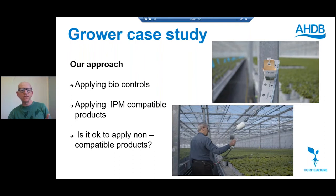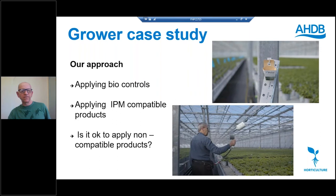Do we apply pesticides in an IPM-compatible manner? Yes, we do. Neil mentioned many of the products we would use. Yes, we still use SB Plant Invigorator. We use Flipper. We would still use on occasions Gazelle and Majestic. We are going to use the product Protac — it looks quite an interesting physical-acting product. There are moments when we would sacrifice our biological control: for lupin aphid going out the door, we would apply deltamethrin. But more often than not we're moving the product out, so it's not having an impact on the biological control that remains in the glasshouse.